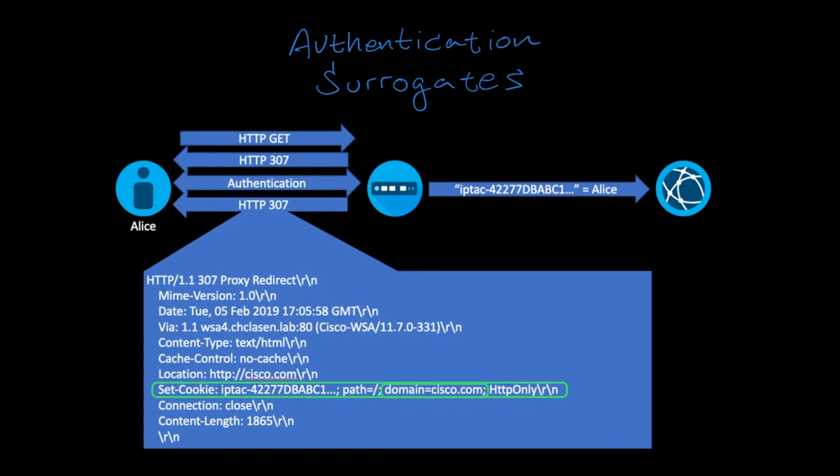There is a limitation to using cookie surrogates, which is very important to understand. Since the authentication token is in the form of an HTTP cookie header, it can only be used for unencrypted transactions.